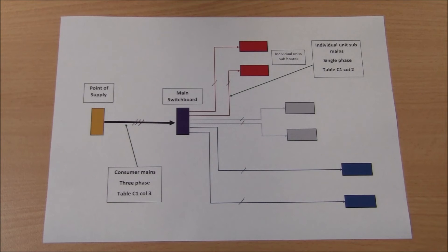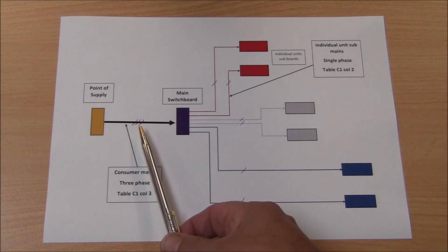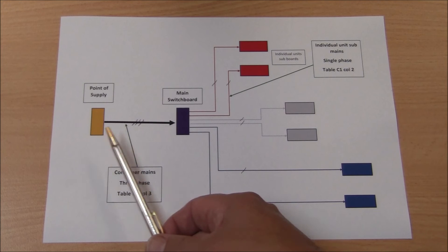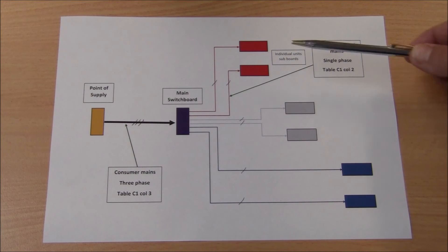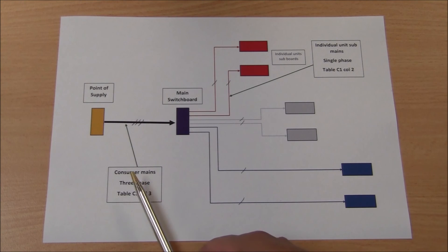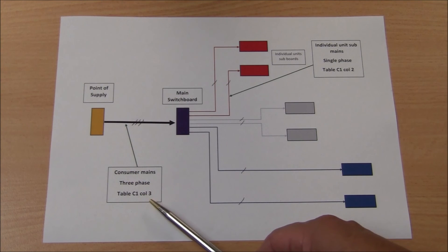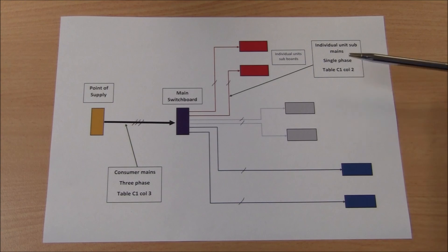Here we have a block diagram for the previous exercise: a three phase set of consumers mains. It goes from a point of supply to the main switchboard, and then the six units were split up evenly across the three phases—two on red, two on white, and two on blue. In this exercise we were looking to determine the maximum demand in the consumers mains, so for this part we will use table C1 column 3. For the individual unit sub mains, they would be single phase and would actually be determined by table C1 column 2.